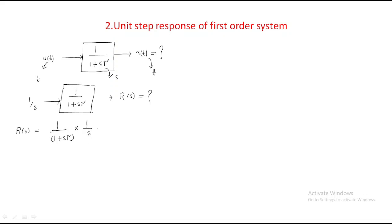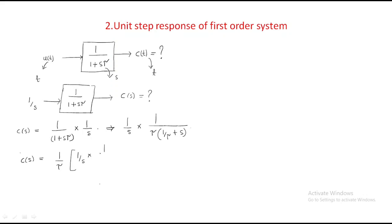This is the signal C(s) we are getting, but looking at it directly we don't get a clear form. In order to simplify it, we should divide using partial fractions. We factor out τ from the denominator, giving us 1/s multiplied by 1/τ, with the denominator becoming (1/τ + s). Arranging properly, 1/τ is outside and the remaining part is 1/(s · (s + 1/τ)).